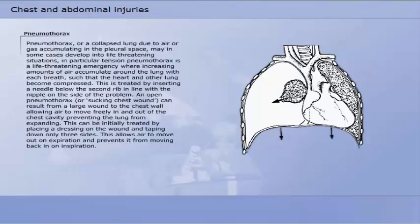Pneumothorax or a collapsed lung due to air or gas accumulating in the pleural space may in some cases develop into life-threatening situations. In particular, tension pneumothorax is a life-threatening emergency, where increasing amounts of air accumulate around the lung with each breath, such that the heart and other lung become compressed. This is treated by inserting a needle below the second rib in line with the nipple on the side of the problem.